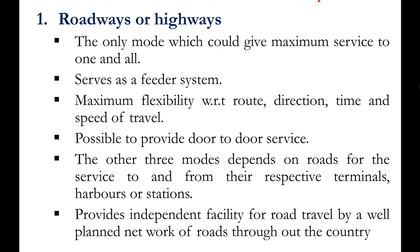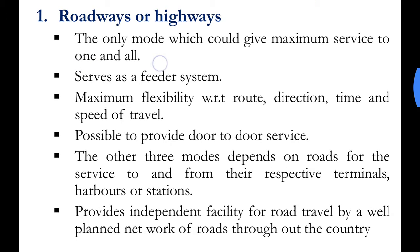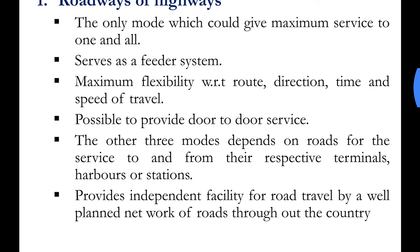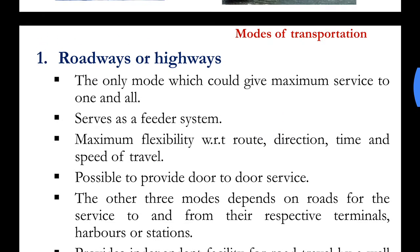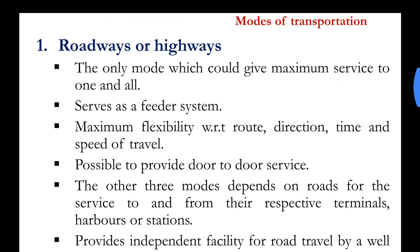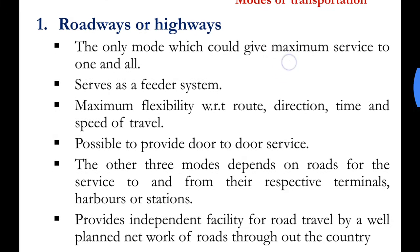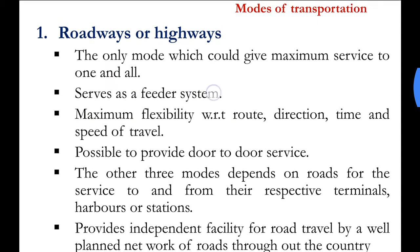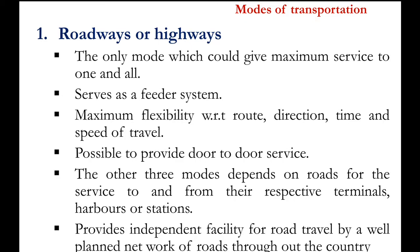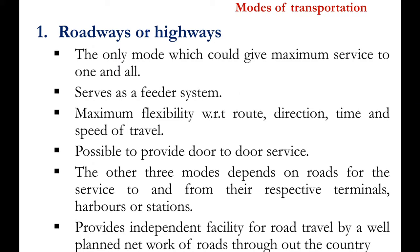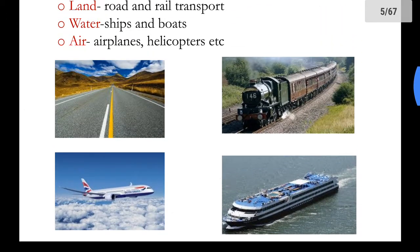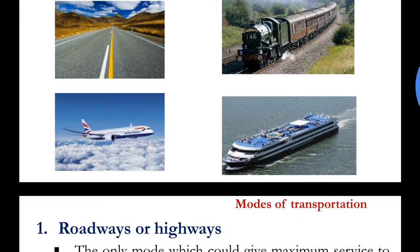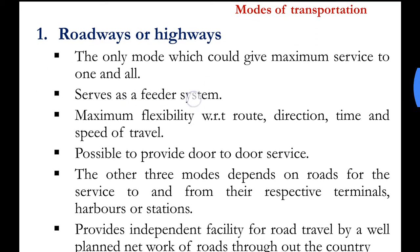First: roadways or highways. This is the only mode which could give maximum service to one and all, since it is broadly spread across our country. Each and every point in the country can be joined using roads — it is the most widespread means of transport. It serves as a feeder system, meaning it is the transport medium through which we get connected to other transport mediums. For example, if you need to travel by aeroplane, you will need to go to the airport using highways — hence highways act as a connecting medium, a feeder system.